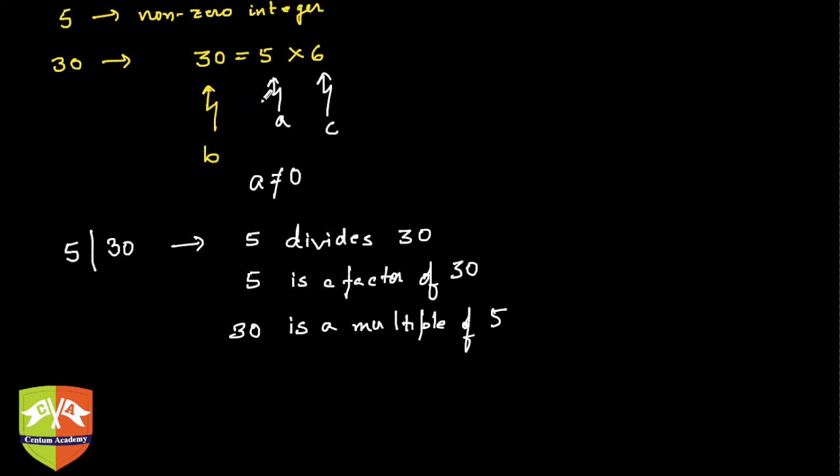Another example could be: clearly 6 divides 42 because 42 can be expressed as 6 into 7. If you see, this number is my b, this is clearly my a, and this is c. So c is an integer.